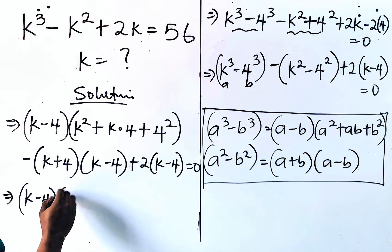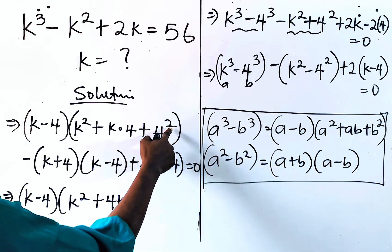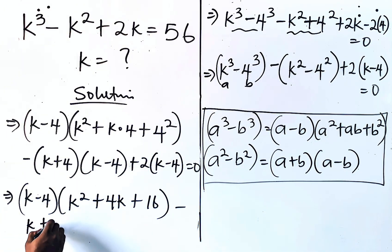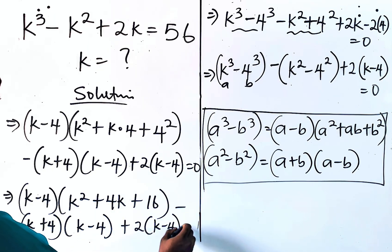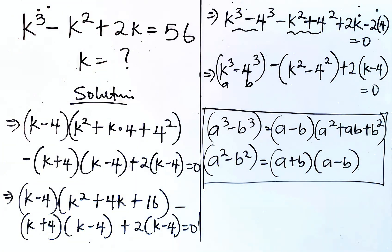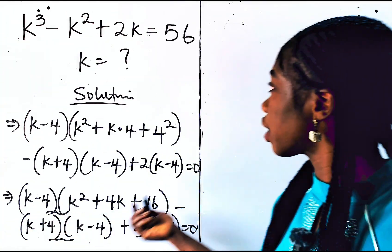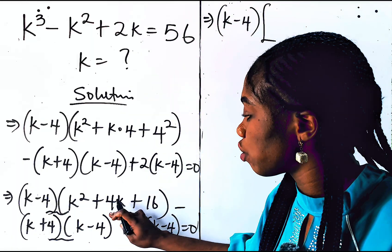So if you simplify, you have (k minus 4) into k squared. If you multiply this it gives you 4k, plus this gives us 4 times 4 is 16. Then we have minus (k plus 4)(k minus 4) plus 2 bracket (k minus 4) equals 0. You observed that k minus 4 is repeated in all three parts, so we are going to factor it out. Factoring (k minus 4) out, we have (k minus 4), open a big bracket, then use this to divide — you'll be left with k squared plus 4k plus 16.